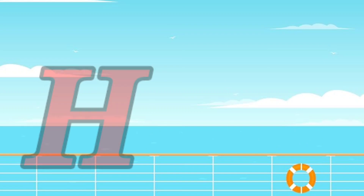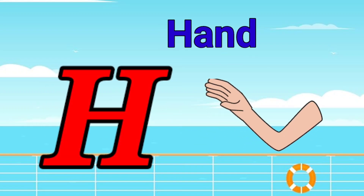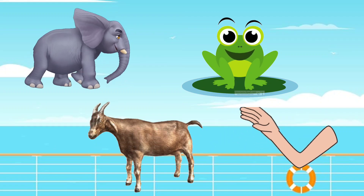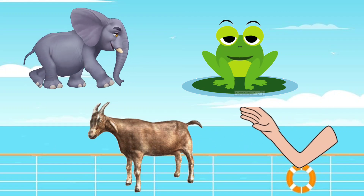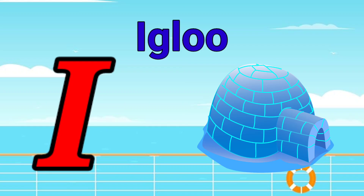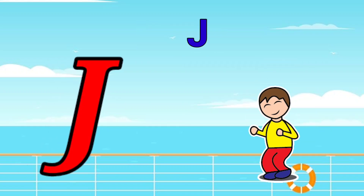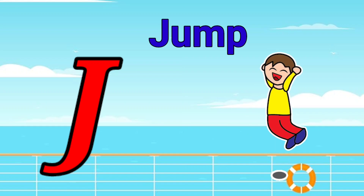H is for hand, h-h-hand. I is for igloo, i-i-igloo. J is for jump, j-j-jump.